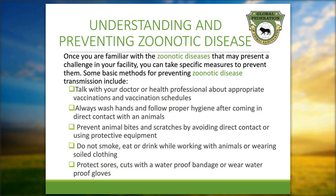Once you are familiar with the zoonotic diseases that may present a challenge in your facility, you can take specific measures to prevent them. Some basic methods for preventing zoonotic disease transmission include: talk with your doctor or health professional about appropriate vaccines and vaccine schedules; always wash hands and follow proper hygiene after coming in direct contact with animals; prevent animal bites and scratches by avoiding direct contact or using protective equipment; do not smoke, eat, or drink while working with animals or wearing soiled clothing.